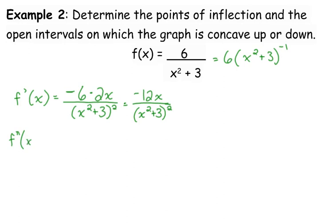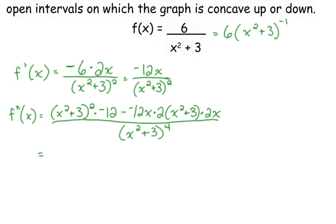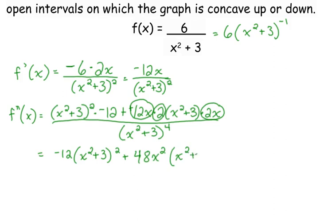For the second derivative, on the other hand, you do have to do the whole quotient rule because you have the variable in both the numerator and the denominator. So low d high — the derivative of the top is negative 12 — minus high d low. That is a chain rule: bring down the exponent first, subtract 1 from the exponent, multiply by the derivative of the inside, all over the bottom squared. Since it was already squared, that becomes to the 4th. So we have negative 12 in front for the first term. The second term, we're subtracting a negative, so that becomes positive: 12x times 2 times 2x gives us 48x squared times x squared plus 3.